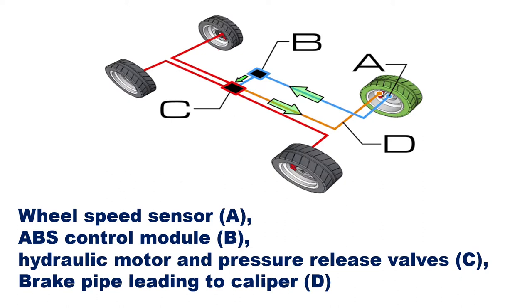Here in this diagram you can understand what is happening. We have taken four wheels — first, second, third, and fourth wheel. Now concentrate on the third wheel. Here you can see something called a wheel speed sensor, marked as A. This is your wheel speed sensor — a sensor which is going to sense the speed of the wheel: how it is moving, whether it is going fast or slow.